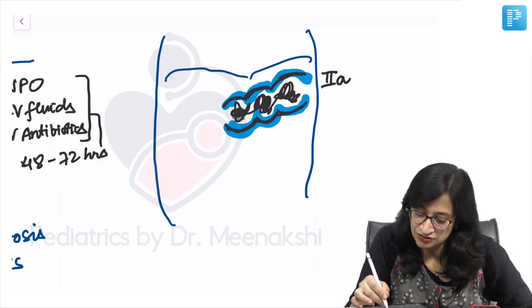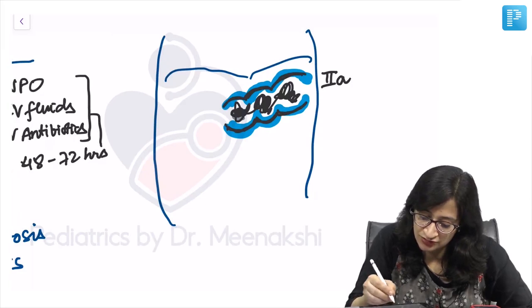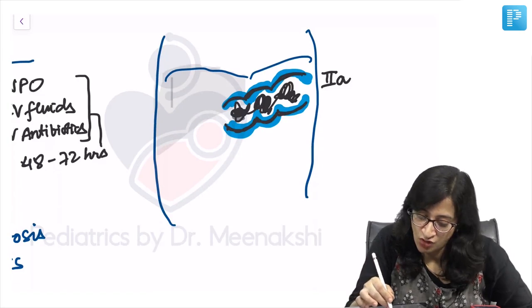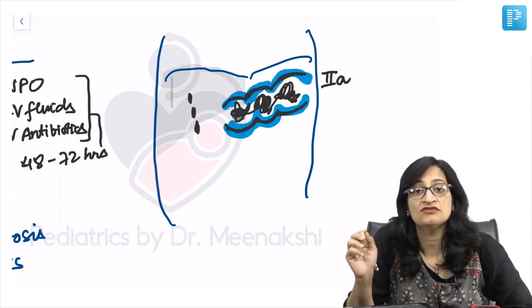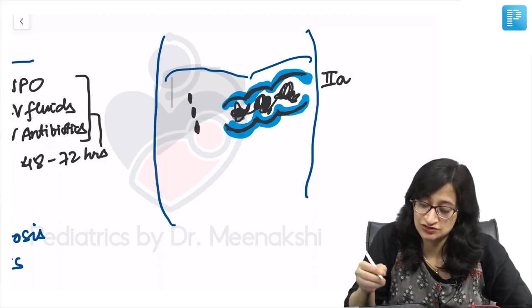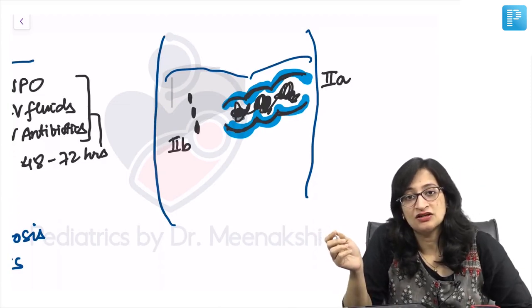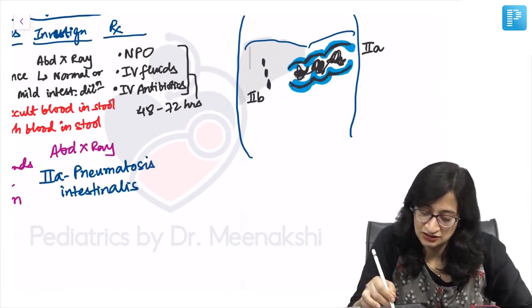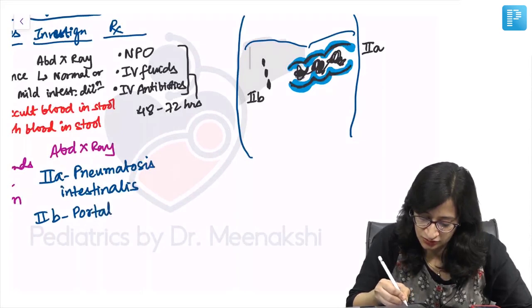The identifying feature of stage 2B is portal vein gas. On the abdominal x-ray, you get gas shadows in the region of the portal vein — in the area of the liver shadow. So the identifying feature of stage 2A NEC is pneumatosis intestinalis, while the identifying feature of stage 2B NEC is portal vein gas.